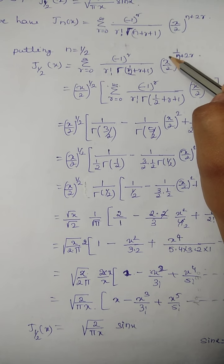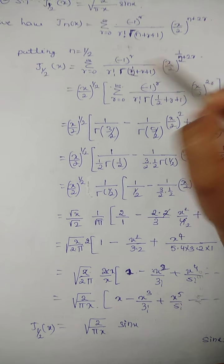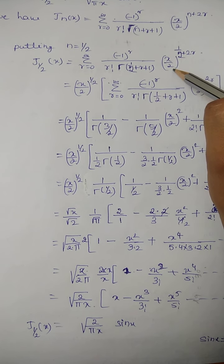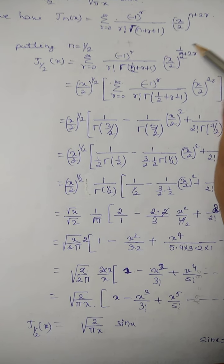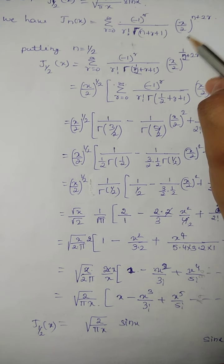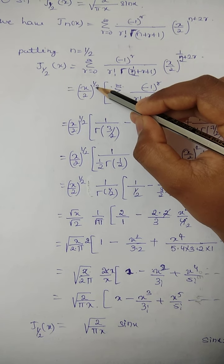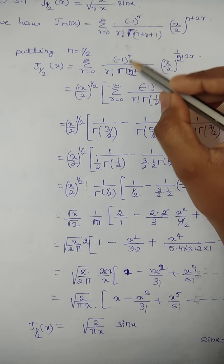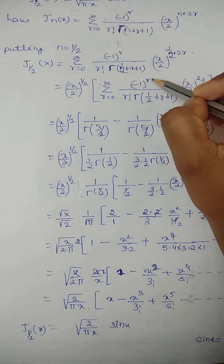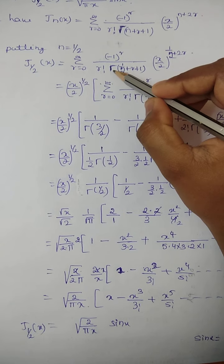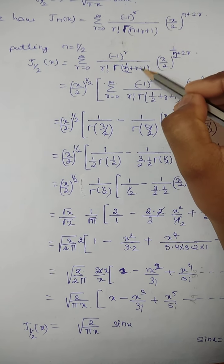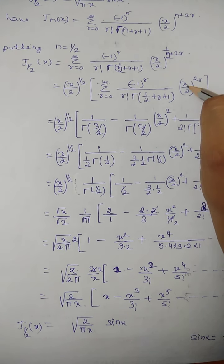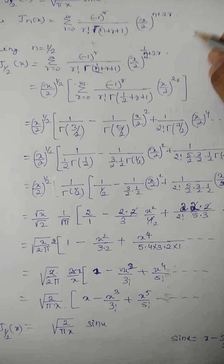Now the term (x/2)^(1/2 + 2r) can be written as (x/2)^(1/2) · (x/2)^(2r). So we take (x/2)^(1/2) out of the summation, leaving inside the bracket: summation from 0 to infinity of (-1)^r divided by r! · Γ(1/2 + r + 1) · (x/2)^(2r).